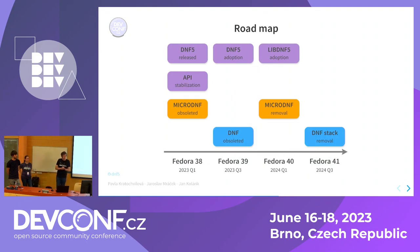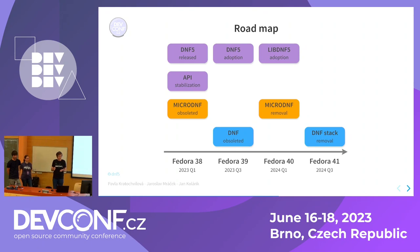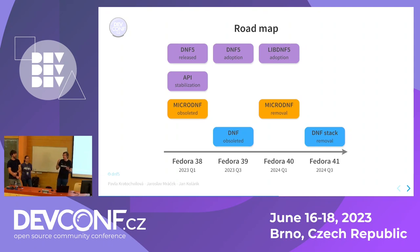Let me move to our roadmap. We are at Fedora 38, and at Fedora 38 MicroDNF was obsoleted by DNF5 — no one complained and we received no complaints for this change. So if you install new containers, you will have DNF5 inside. Fedora 38 was also the first milestone where DNF5 appeared in the Fedora repositories.